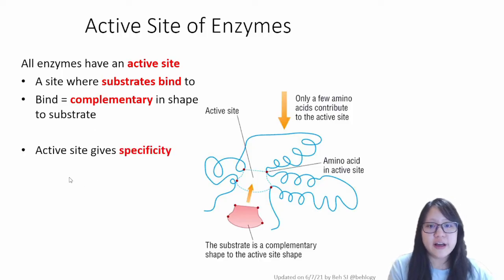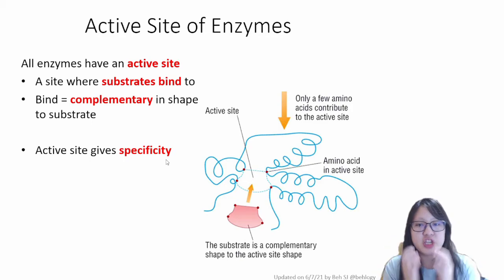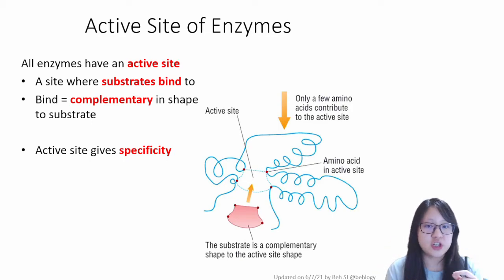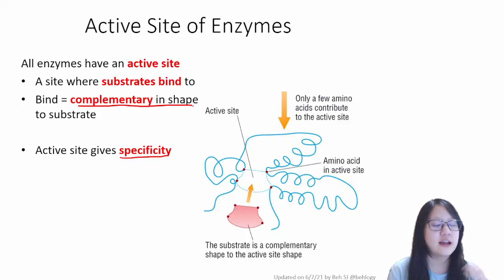Now all enzymes are specific, and it is the active site that gives this specificity. The shape of the active site determines which substrates it can bind to particularly, specifically. This word specific is very important. This word complementary in shape is also really important, and you will see it again and again throughout this chapter and throughout your syllabus.